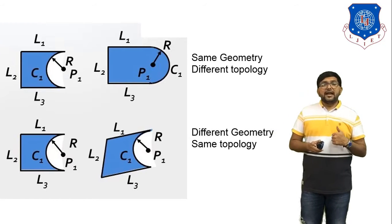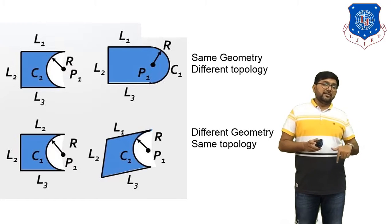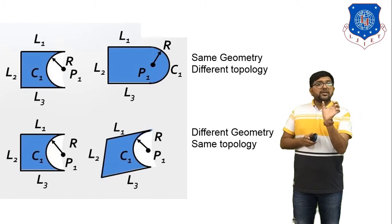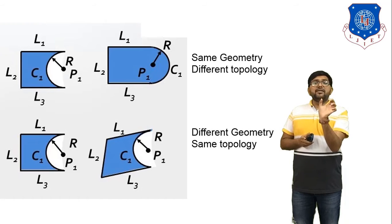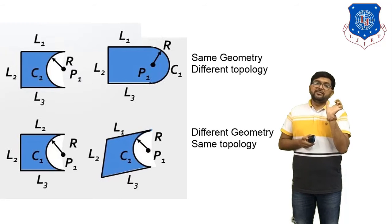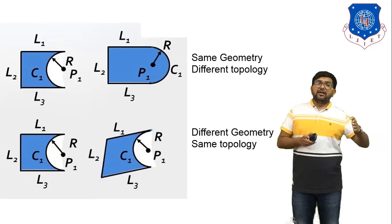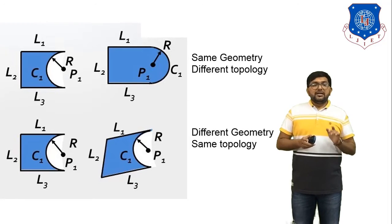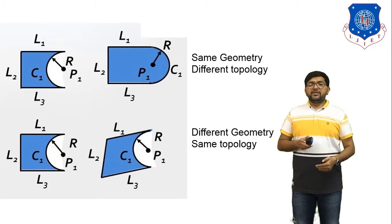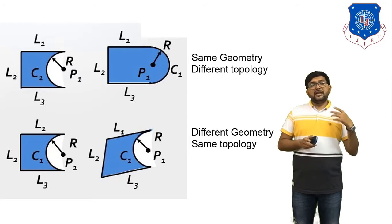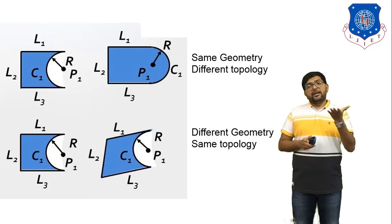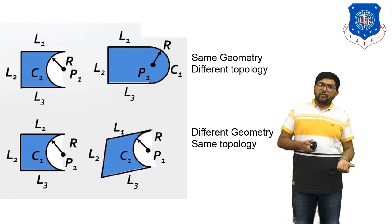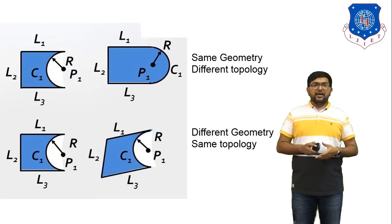The next figure indicates different geometry but same topology. Once you observe both figures they look alike, but the dimensions of all entities are different. The dimension of L1 in the first figure and dimension of L1 in the second figure are both different. This diagram helps you easily understand how two objects can have same geometry with different topology, and different geometry with same topology. These are the basic concepts of geometry and topology.